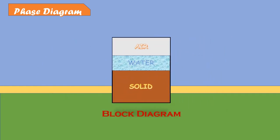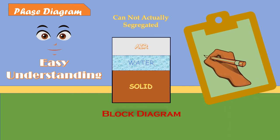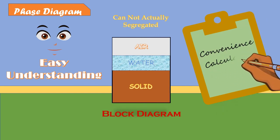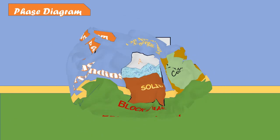This diagram is called a phase diagram or block diagram. It may be noted that the three constituents cannot actually be segregated as shown in the phase diagram. The phase diagram is an artificial diagram used for easy understanding and convenience in calculation.